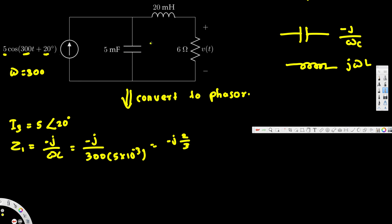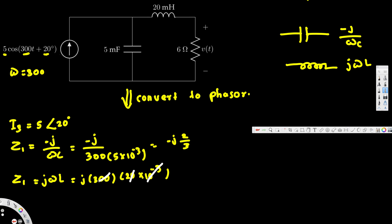For the inductance, when we convert it into phasor it becomes j·omega·L. In our case that is j times 300 times 20 millihenries (20×10⁻³ henries). The 10⁻³ and the three zeros cancel each other, giving us 6j — this is Z2. For the resistor, Z3, whenever we convert a resistor to phasor it remains the same, so Z3 is just 6.